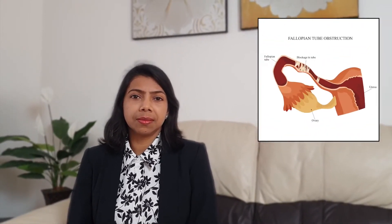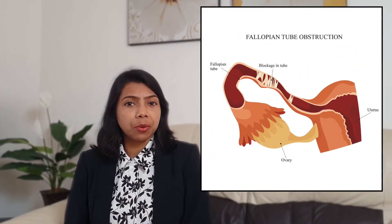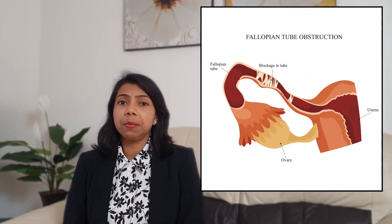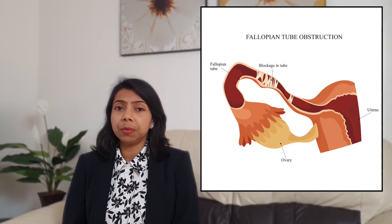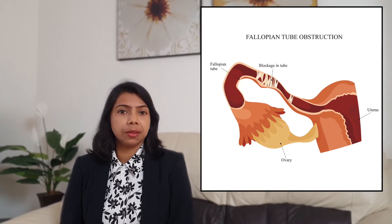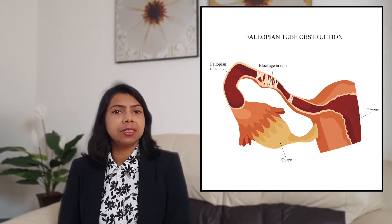A normal and functioning fallopian tube is vital for natural conception. If the tube is blocked, the sperm and egg will not be able to meet each other and pregnancy is almost impossible.